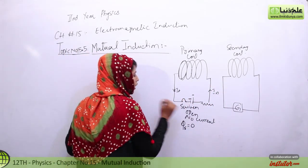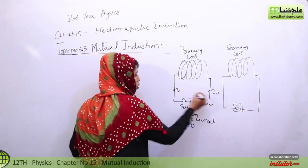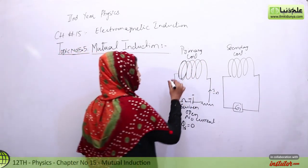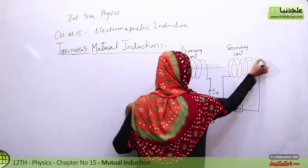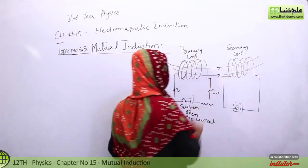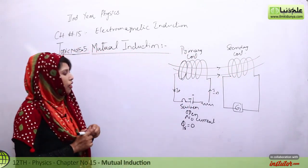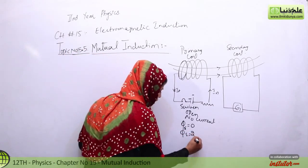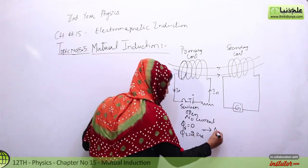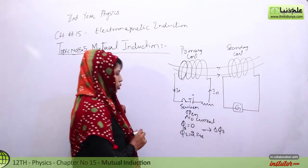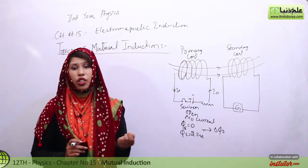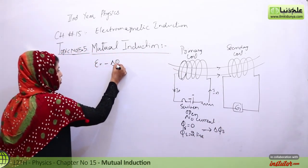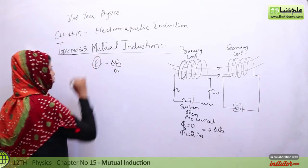As we close the circuit, current will start flowing and it will come back here. As a result, a magnetic field is produced and the magnetic field lines will interact with the secondary coil. The first magnetic flux was zero; now the magnetic flux, for example, has two lines passed through. That means a change in magnetic flux delta phi is produced. Whenever there is a change in flux with respect to time, according to Faraday's law, EMF is induced.